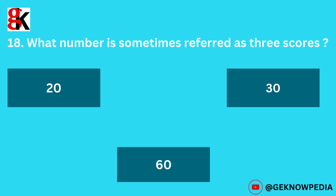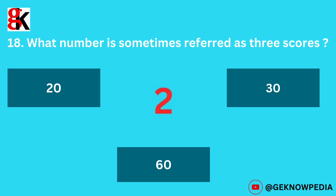Eighteenth question. What number is sometimes referred to as three scores? Options: twenty, thirty, sixty. The correct answer is 60.